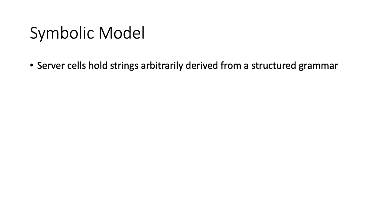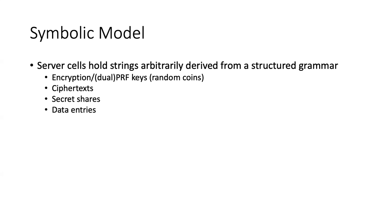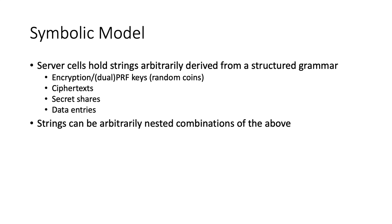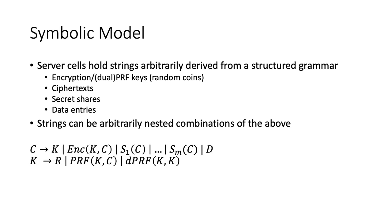In the symbolic model, server cells hold strings that are arbitrarily derived from a structured grammar. In our work, we allow for encryption and possibly dual PRF keys (which are basically random coins), ciphertexts from this encryption scheme, secret shares, and data entries themselves. Strings can be arbitrarily nested combinations of the above. Examples include random coins r and r-prime, or an encryption under some PRF computation of a secret share of another encryption of data item D1.